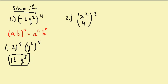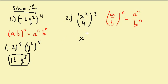For the second problem I'm going to use the property: (a over b) to the n equals a to the n over b to the n. I raise each one to the exponent outside. So this gives me x squared raised to the third over 4 raised to the third. That's a multiply, so I get x to the 6th over 64.